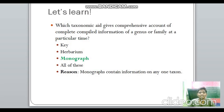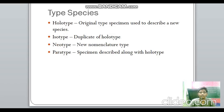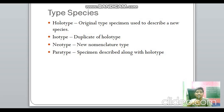Type specimens include: holotype — the original type specimen used to describe a new species; isotype — the duplicate of holotype; neotype — a new nomenclature type (neo = new); and paratype — the specimen described along with the holotype.